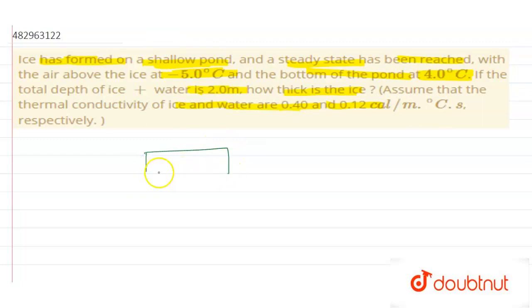If the ice has formed on top and the bottom of the pond is water, then the total thickness of ice and water is 2 meters.